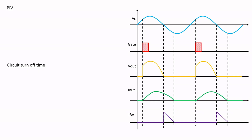What is the peak inverse voltage? The peak inverse voltage is the maximum negative voltage appearing across the thyristor. During the negative half cycle, the maximum negative voltage appearing across it is Vm, so the peak inverse voltage equals Vm. And the circuit turn-off time Tc: since pi is the instant at which the thyristor is turned off, Tc = π/ω.